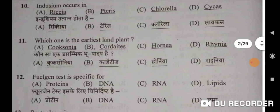Indusium occurs in Pteris — Option B will be the correct option. Eleventh question: which one is the earliest land plant? Cooksonia will be the correct option — Option A. Kaunsa ek prarambhik bhupadap hai? Cooksonia.